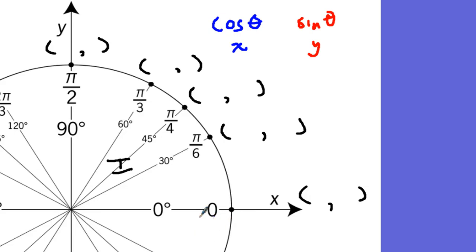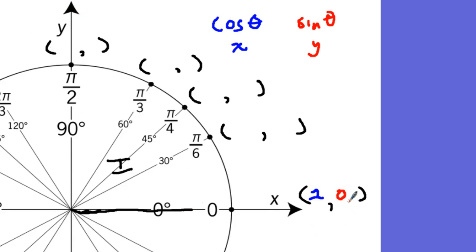Let's look at zero degrees or zero radians. If I have something at zero radians — it's just a straight line, it's all in the horizontal, all in the cosine. So cosine of zero equals one. There's nothing in the vertical, so sine of zero equals zero. If you put cosine of zero in your calculator, you get one; sine of zero gives you zero. At 90 degrees or pi over two, we go straight up — we don't go anywhere in the x, so cosine equals zero. Sine of 90 degrees equals one because we're going all vertical.